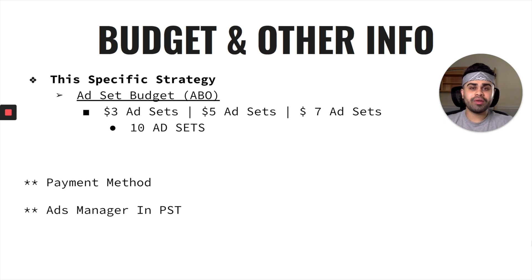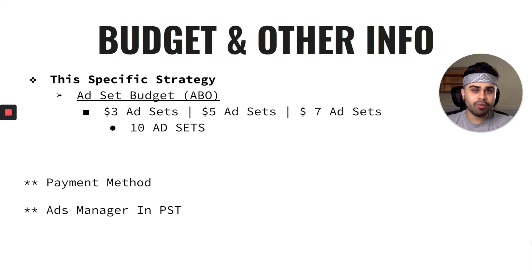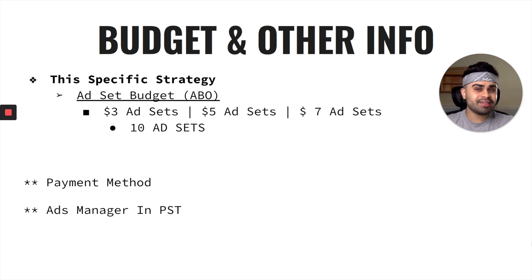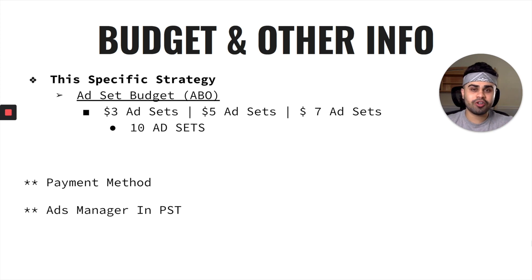If you were doing $3 ad sets you'd be spending $30 per day; $7 ad sets would be $70 a day. For this video we're going to meet in the middle and do $5 ad sets — about $50 a day. We are going to be using ad set budget, ABO, not CBO. CBO I usually only like utilizing when scaling. If you are using CBO in testing, I highly recommend spending at least $100 a day or more, as CBO does better when spending more aggressively. With ABO and testing, you have more room and control to see what's working and what's not.